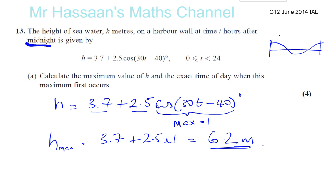Now we want to find the exact time of day when this maximum first occurs. Now the maximum first occurs, what we just found, when cosine 30t minus 40 is equal to 1. That's when the maximum occurs. We want to find the value of t for which it is true. Now we've got to modify our limits slightly. We've got t between 0 and 24.